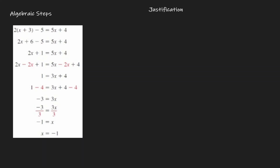One way to justify the whole process is to justify every single step that we took through the process. Let's look at the word problem on the left-hand side and justify every single step. Let's call this step 1, step 2, 3, 4, 5, 6, 7, 8, 9, and 10. Now, how come step 1 is true? The reason is because that's the given equation — so we say that's given.